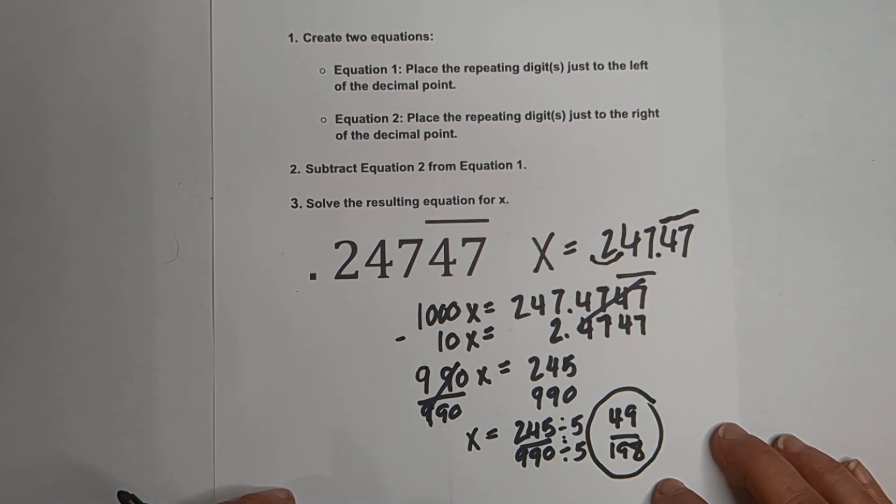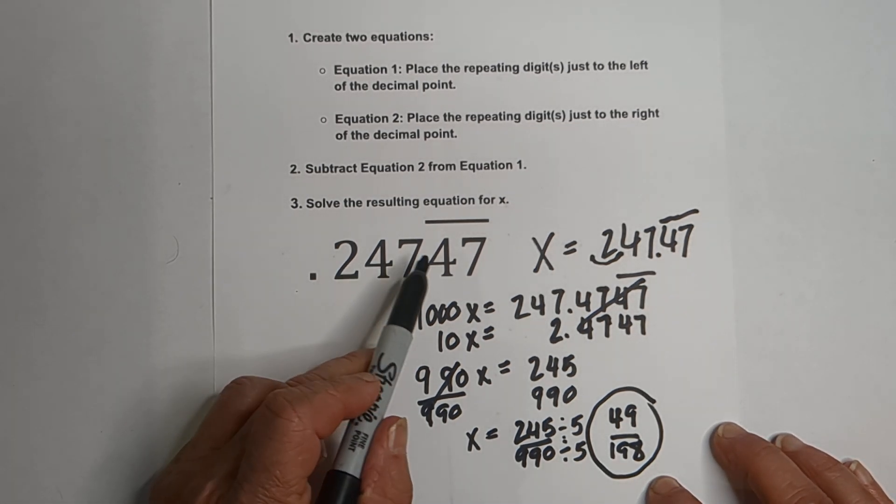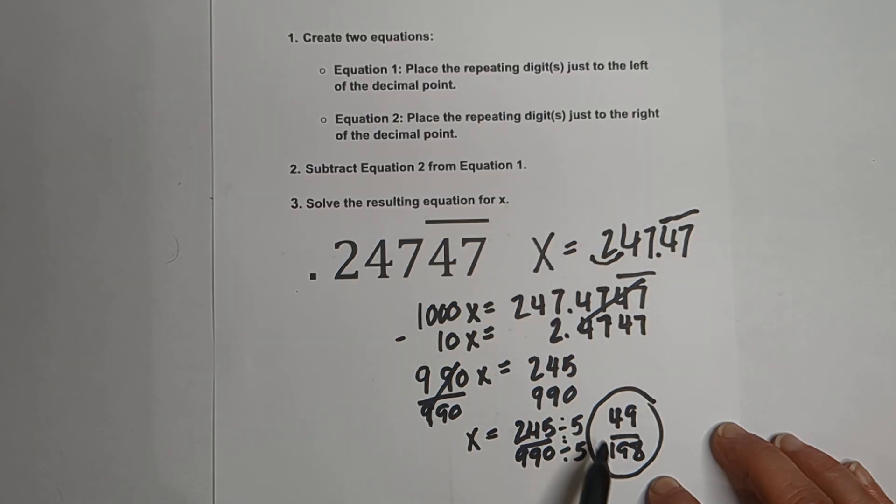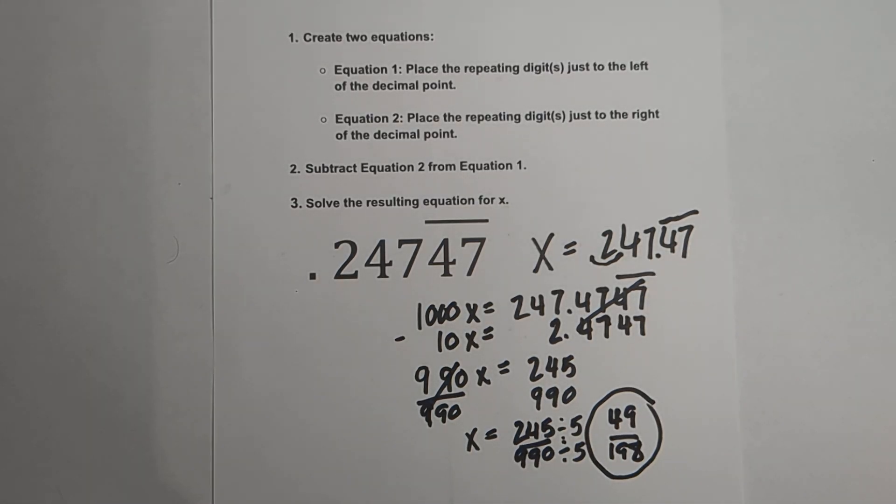Kind of a strange fraction, but here we go. 2.4747 repeating equals 49 over 198. I hope that was helpful.